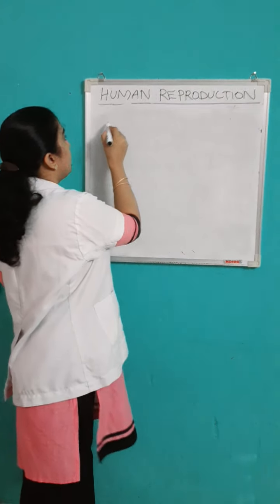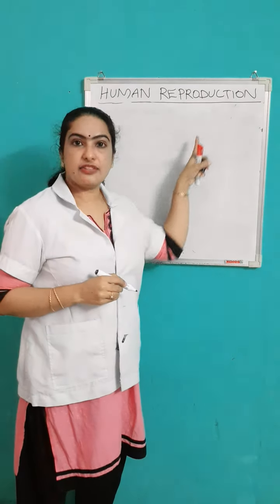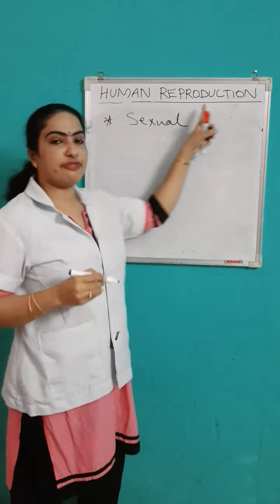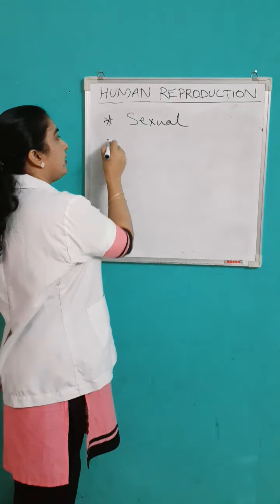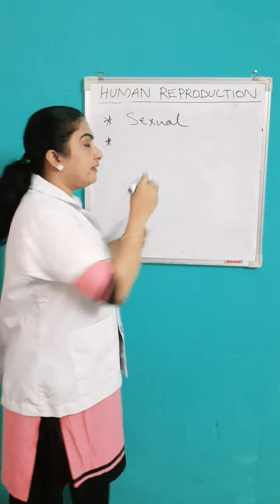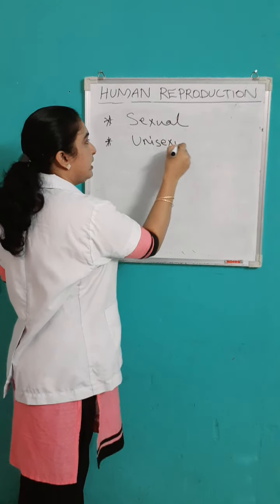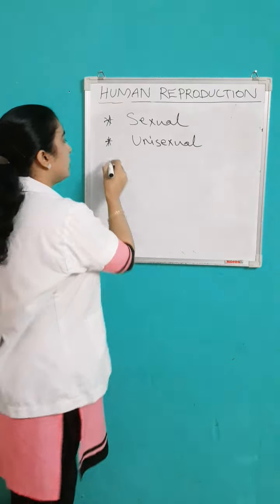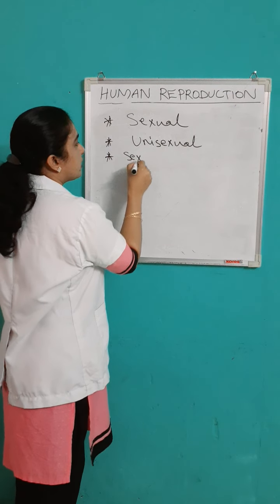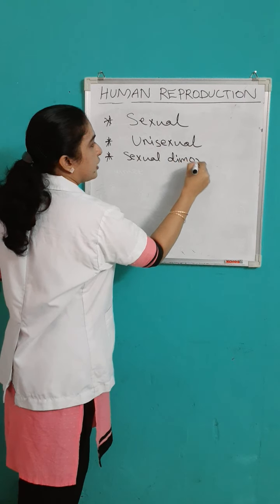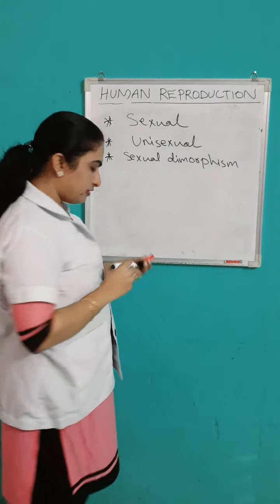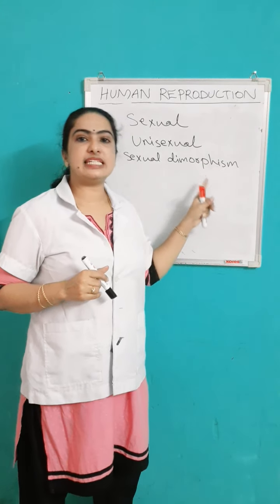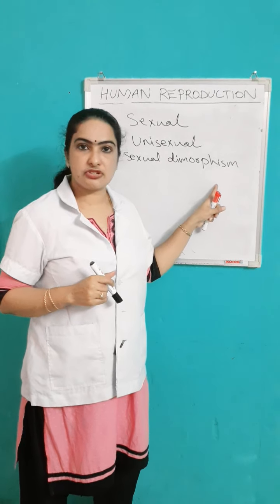The first point: in human beings, the mode of reproduction is sexual. The second point is, in case of human beings, they are unisexual. Unisexual means separate sex organs are there in male and female organisms. The third point is they show sexual dimorphism, which means the male and female organisms are physically different from each other.